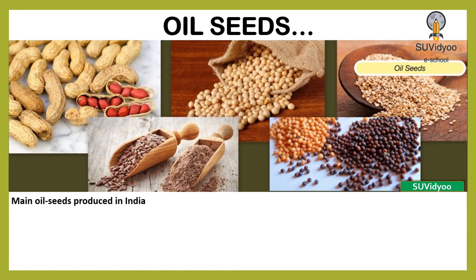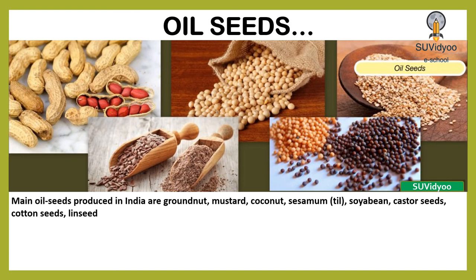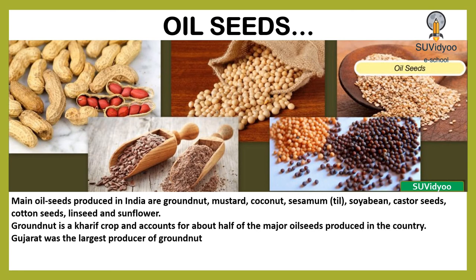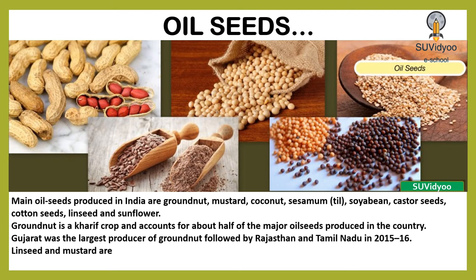Main oilseeds produced in India are groundnut, mustard, coconut, sesame (i.e. til), soya bean, castor seeds, cotton seeds, linseed and sunflower. Groundnut is a Kharif crop and accounts for about half of the major oilseeds produced in the country. Gujarat was the largest producer of groundnut, followed by Rajasthan and Tamil Nadu in 2015-16. Linseed and mustard are Rabi crops. Sesame is a Kharif crop in North and Rabi crop in South India.